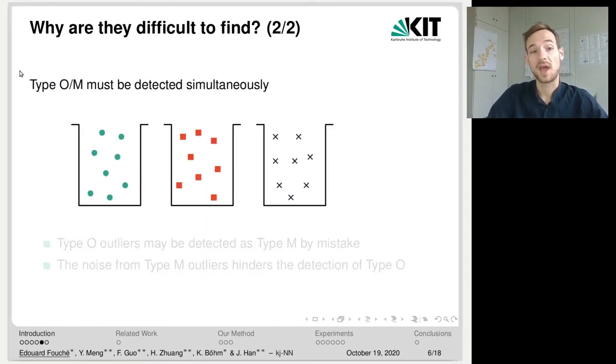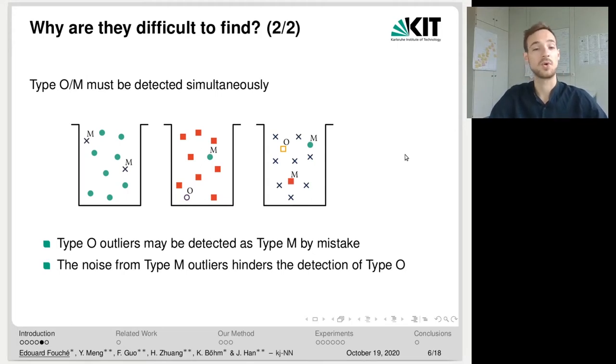Also, we find that the type O and type M outliers must be detected simultaneously. If we want to detect type M outliers, then maybe the type O outliers, so out of distribution, will be detected as type M outlier misclassification by mistake. This would lead to poor handling of such outliers. Also, if we want to detect type O outliers, then the noise introduced by the type M outliers may make the detection of type O outliers much more difficult. So in the paper, we found that the detection of both outlier types jointly leads to the best results with respect to both types of outliers.